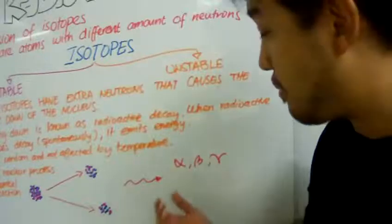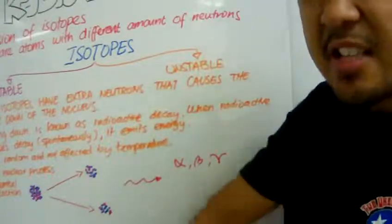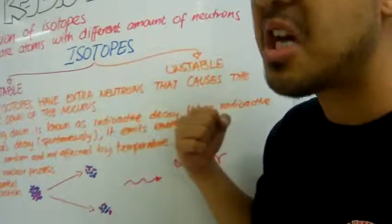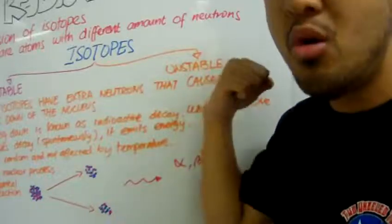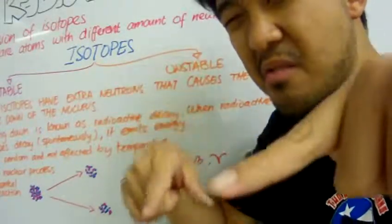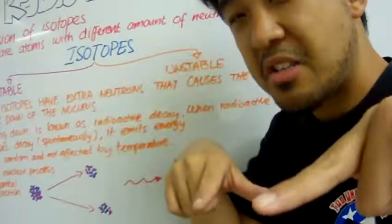Are harmless. For example, alpha particles. When it hits our skin, our skin can deflect it. We can deflect alpha particles.